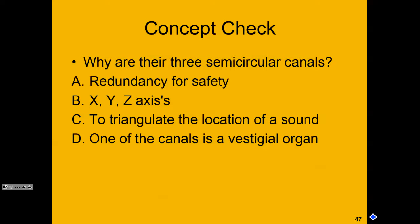The vestibular nerve connects to the semicircular canals and the vestibule. The cochlear nerve connects to the cochlea, and both the vestibular and cochlear nerves merge to form the vestibulocochlear nerve. That's all we have for our special senses.